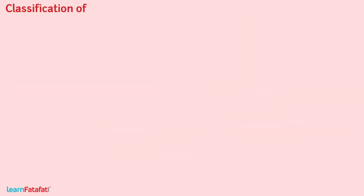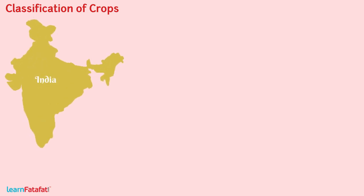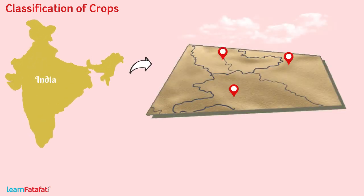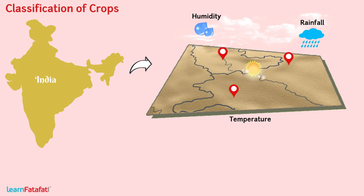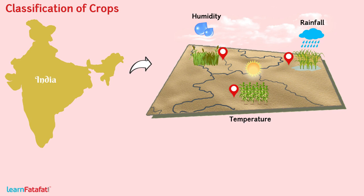Classification of Crops: We all know that India is a very big country. Here, from region to region, we can find different climatic conditions like temperature, humidity, and rainfall. Since different crops require different climatic conditions for their growth, we can find a variety of crops from region to region. Basically, on the basis of season, we can classify crops into two cropping patterns: Kharif crops and Rabi crops.